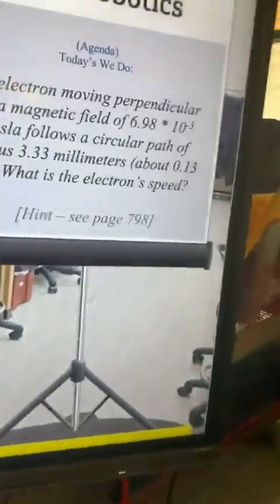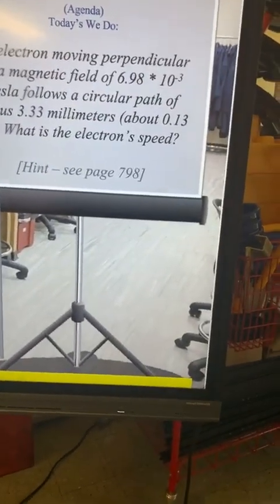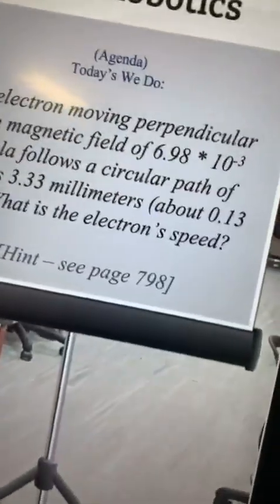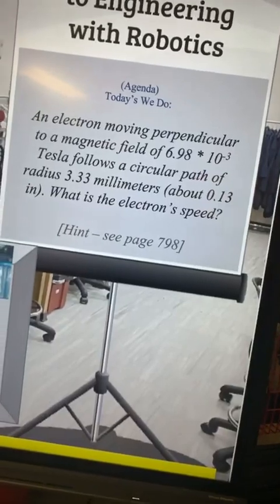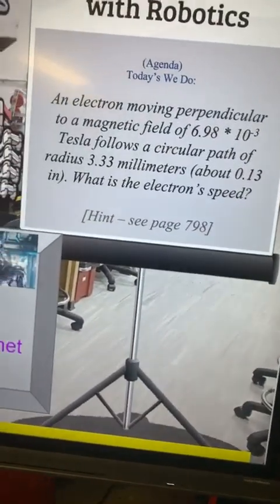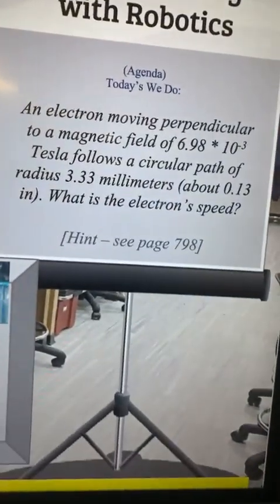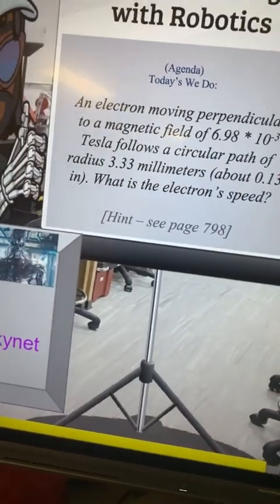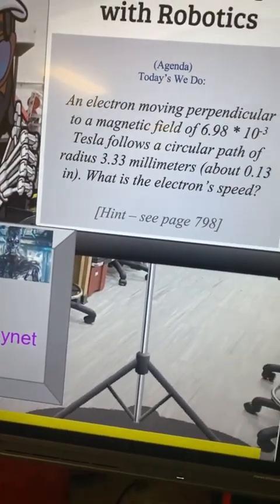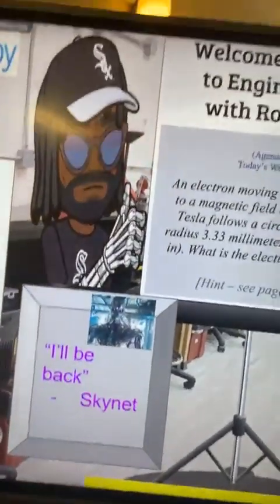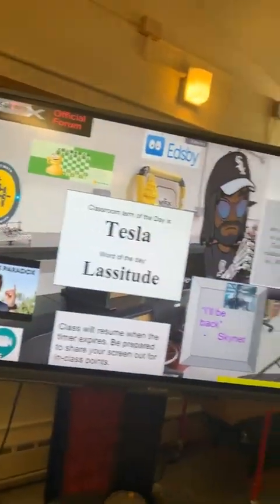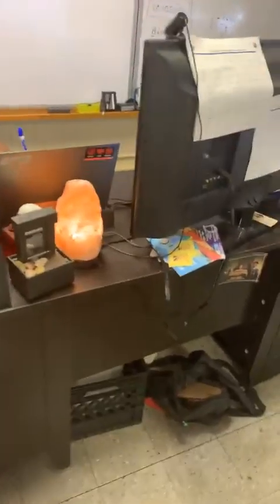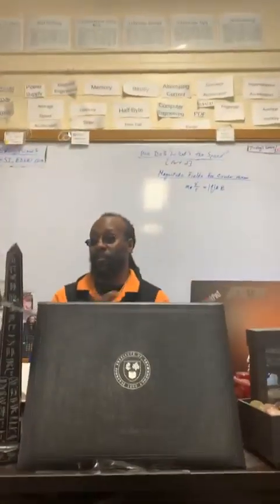Somebody wants to read it or are you going to read it? An electron moving perpendicular to a magnetic field of 6.98 times 10 to the negative 3 tesla follows a circular path of radius 3.33 millimeters, about 0.13 inches. What is the electron's speed?